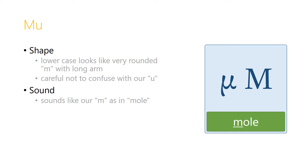The letter mu — it's pronounced mu, the sound that a cow makes. The shape in the uppercase is just like an English or Latin letter M, and in the lowercase again looks like a curvy M, but like with the beta we have an arm that reaches down below the line a little bit. Be careful not to confuse the lowercase mu with our letter U — this is an M sound, so you need to notice the arms reaching down and remember that this is an M. The sound is just like our letter M, as in mole.